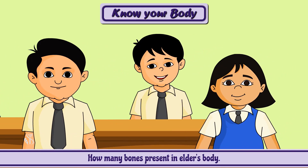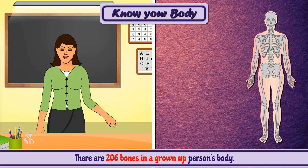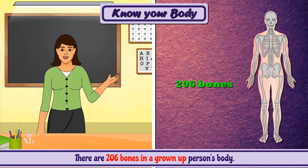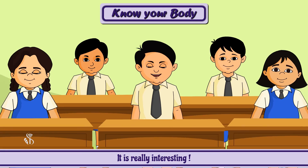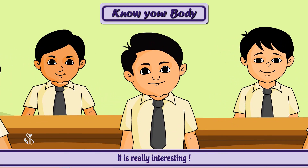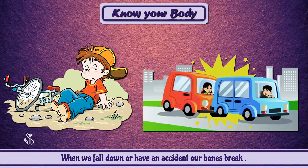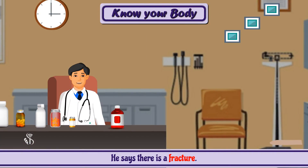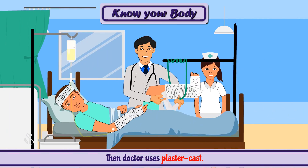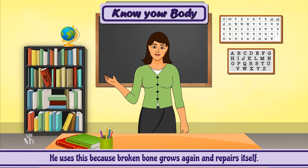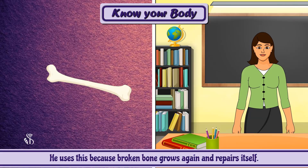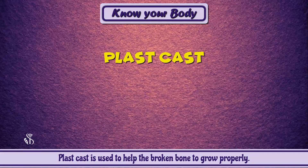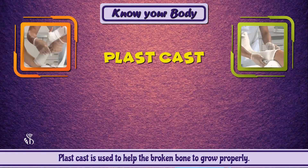How many bones are present in an elder's body? There are 206 bones in a grown-up person's body. When we fall down or have an accident, our bones break — we call this a fracture, which means a broken bone. The doctor uses a plaster cast to help the broken bone grow properly and repair itself.